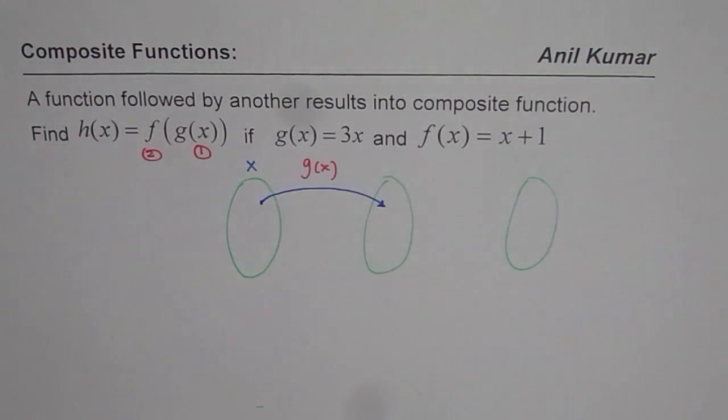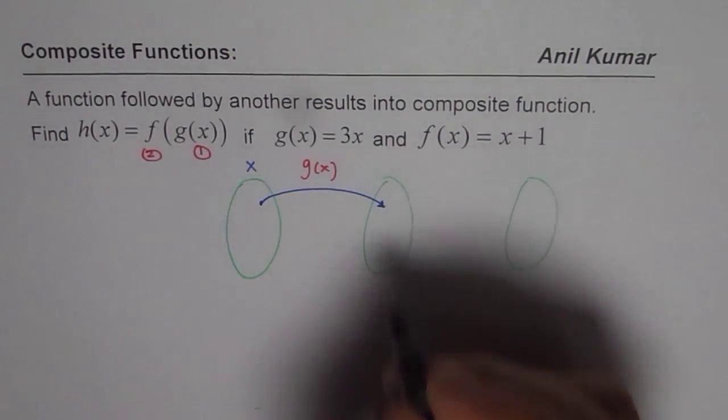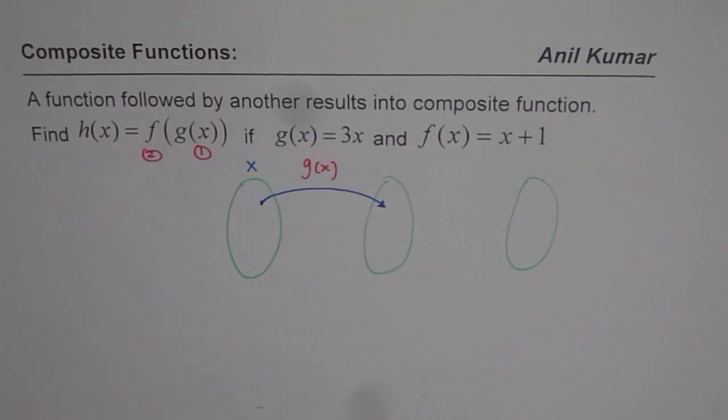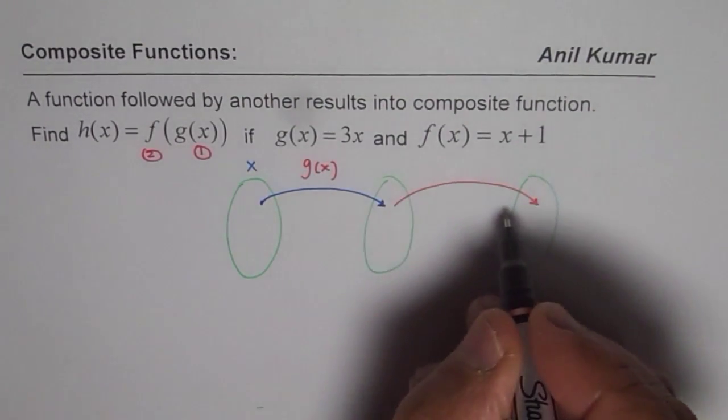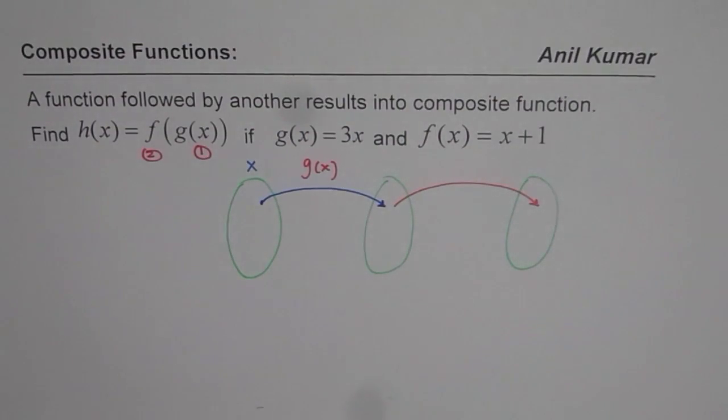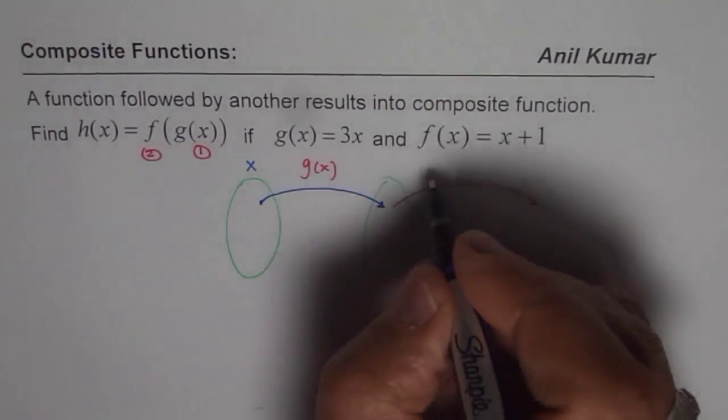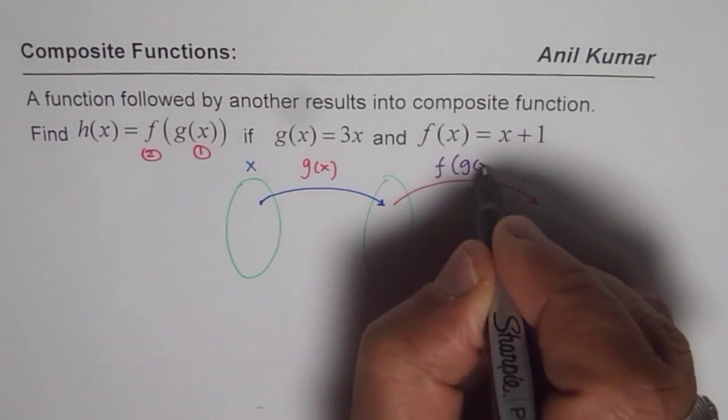Now once you get the output, the second operation is performed and that operation results into f(g(x)). This is the second operation performed. We have one operation after the other operation. This operation results into f(g(x)).